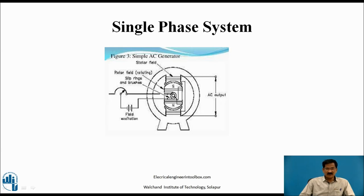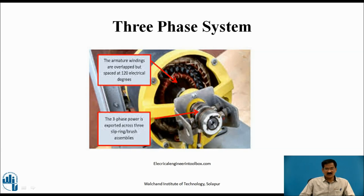In single-phase generation, a single-turn coil is rotated in a magnetic field. Generation of electricity requires a conductor, motion of the conductor, a magnetic field, and collection of the induced EMF. In a three-phase system, the concept is very similar to the single-phase system. The only difference is that in single-phase we use a single coil, whereas in three-phase we use three different coils. These three coils are overlapped with each other and displaced electrically by 120 degrees.